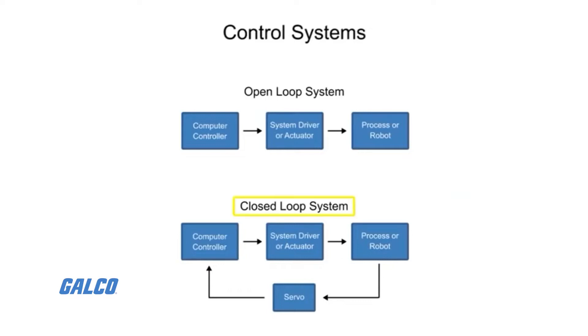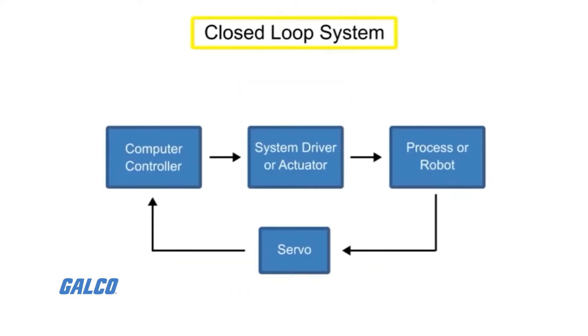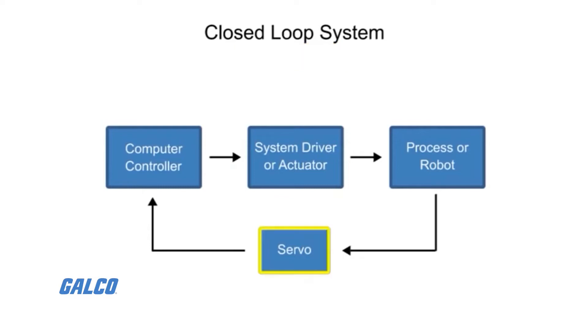There are two different systems of use in vector control: closed-loop and open-loop. Closed-loop vector control is when an encoder is used in conjunction with a vector drive to provide motor shaft position feedback.